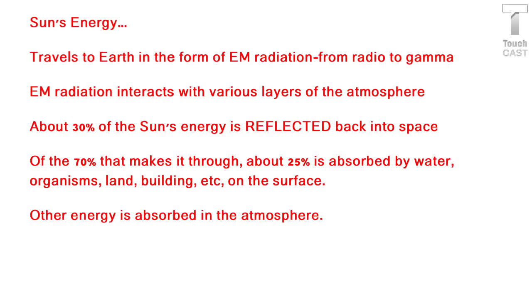About 30% of the sun's energy is reflected back out into space — we don't even get an opportunity to come in contact with it. Of the remaining 70% that gets through, about a quarter of it is absorbed by what's on the surface of the Earth: water, organisms, land, buildings, etc.